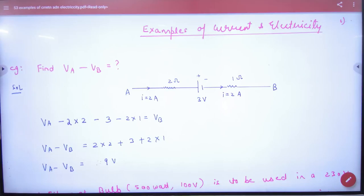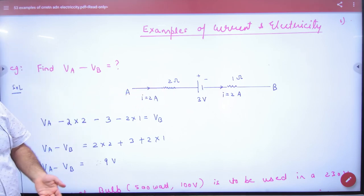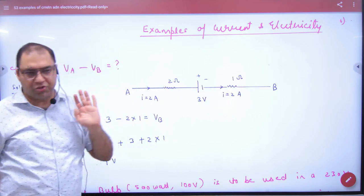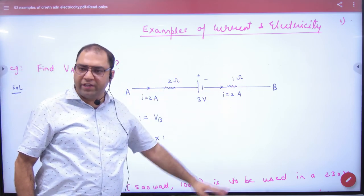So sheet number 53 is a very important question for each level. You will have current, battery, resistances and current always moves from higher to lower potential. Higher to lower move. So you have to tell potential difference of A and B.